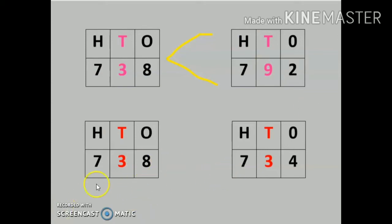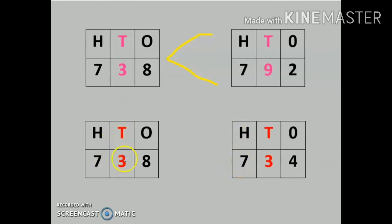See the next numbers: 738 and 734. Count the number of digits — 1, 2, 3 and 1, 2, 3 — the number of digits are the same. According to rule number 2, we start comparing from the hundreds place: here it is 7 and here also it is 7 — same. Compare the tens column: here it is 3 and here also it is 3 — same. So what do we do if the tens place is also the same?